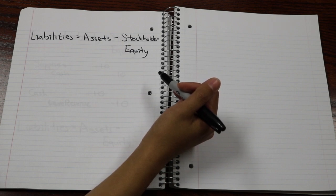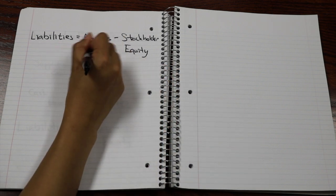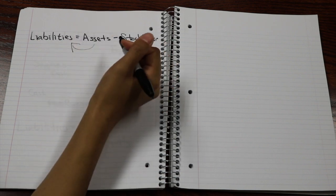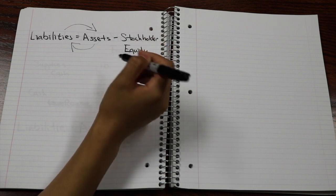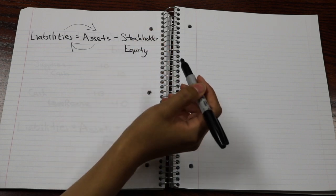However, the general format does put assets on the left-hand side and the other two on the right, because it translates very well into the balance sheet, which we'll get into in the next video.